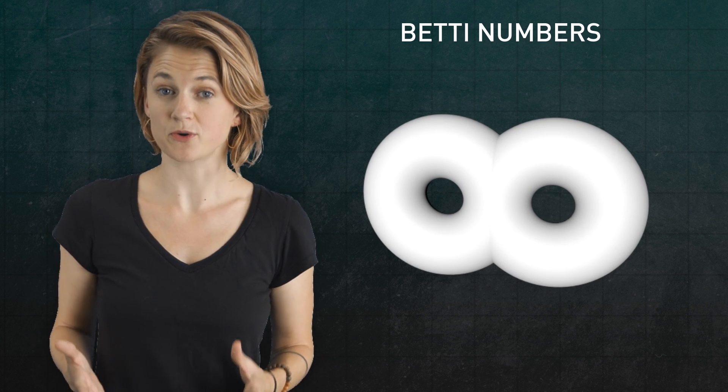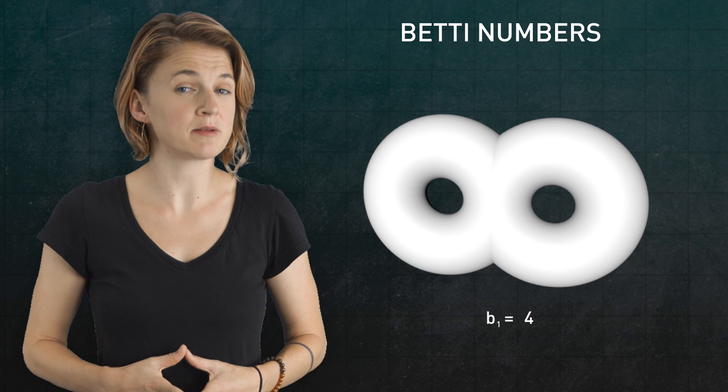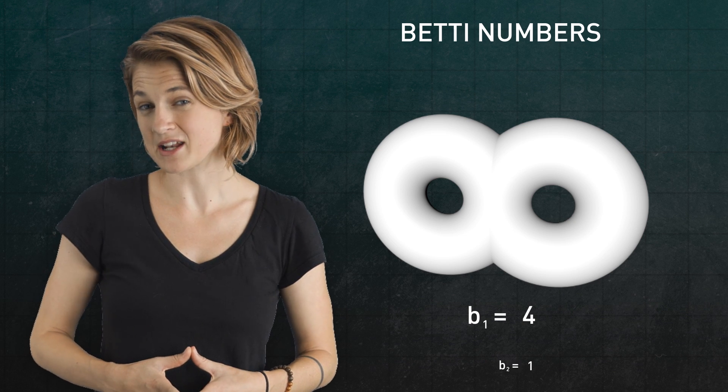What about this two-holed torus? Its first Betty number is four and second Betty number is one.